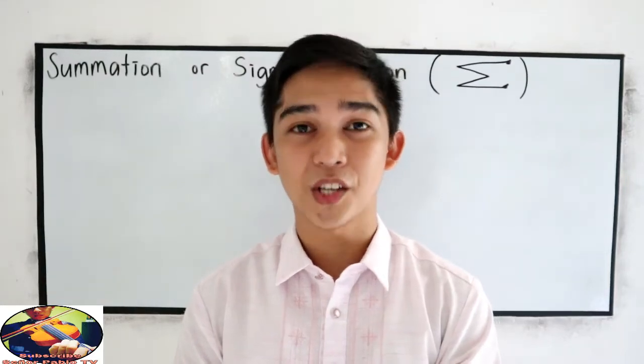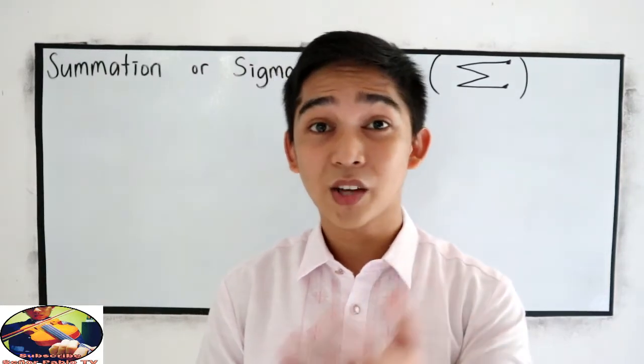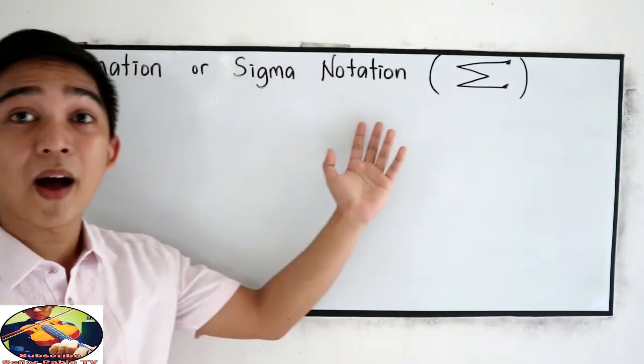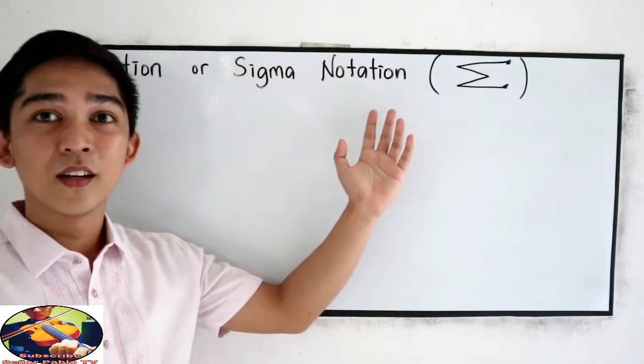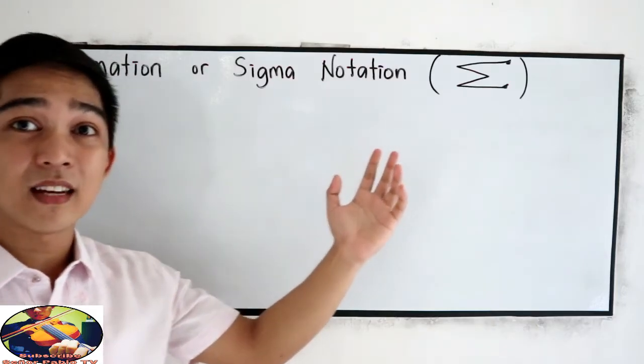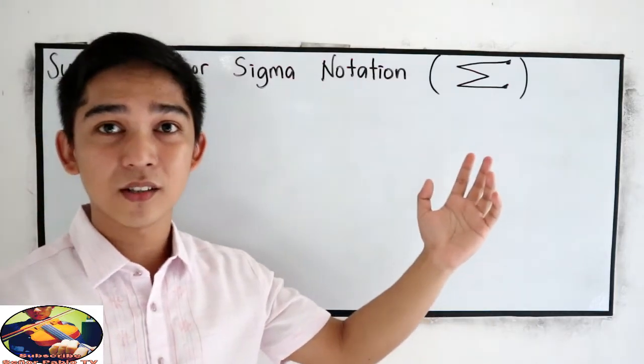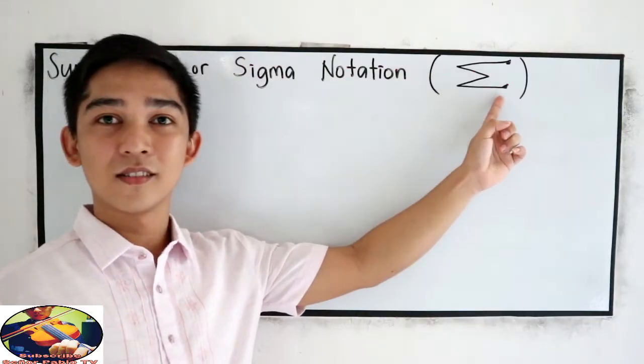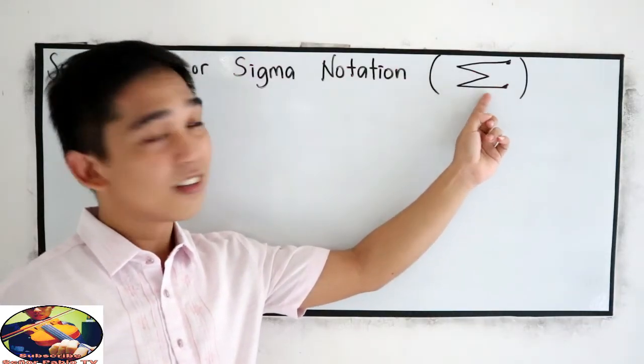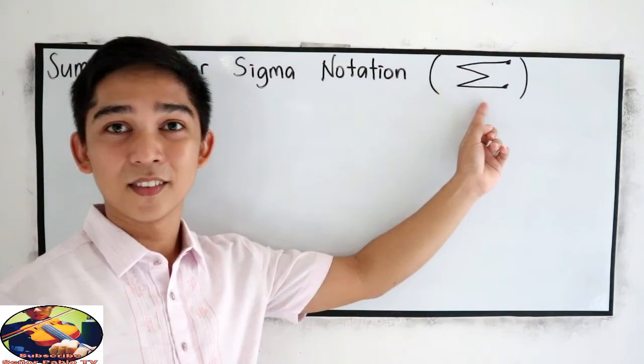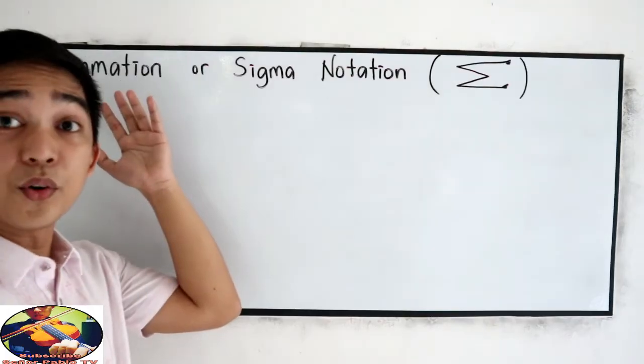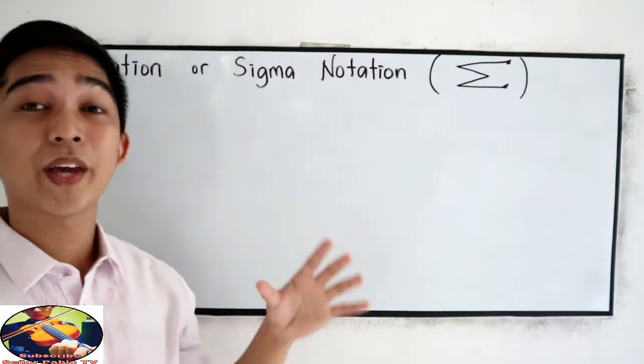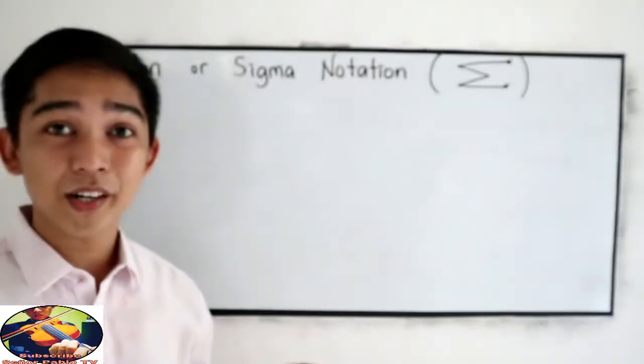Since we are dealing with series, you will also encounter the word summation or sigma notation. That can be represented in a capital Greek letter, this symbol. The root word of summation is sum, so we are going to get the sum of our sequence.